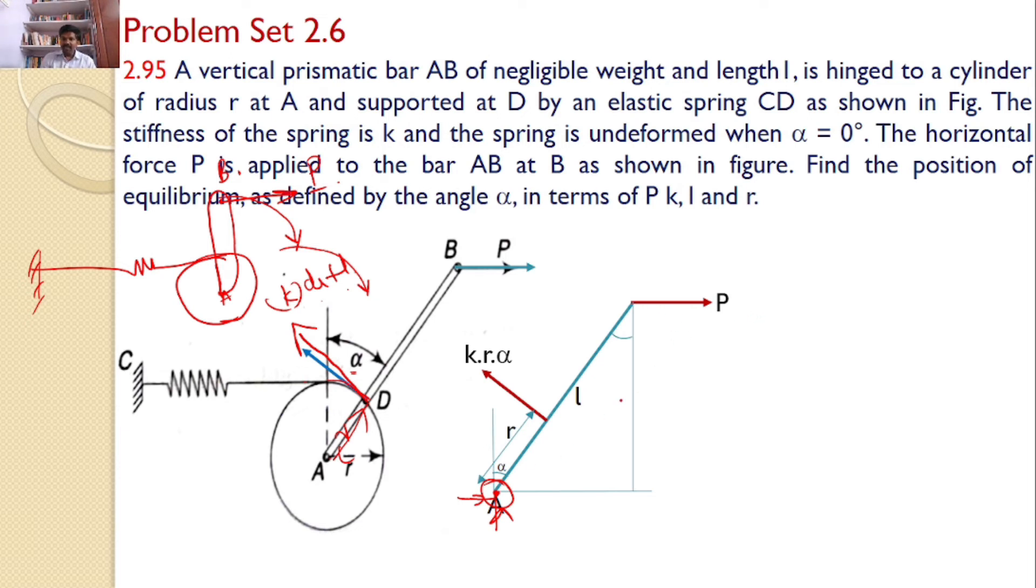By taking the moments about point A, I can find the required value. To find the distances, I am constructing a small right angle triangle here. This angle is also equal to alpha because opposite sides are parallel. Since this angle is alpha, this angle is also equal to alpha. This length is L. Hence, this distance must be equal to L cos alpha.